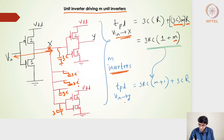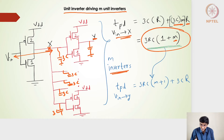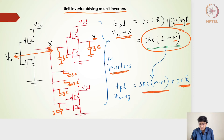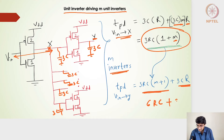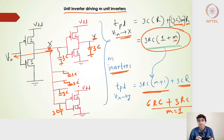The propagation delay from input to output y includes the delay to node x plus the delay through the second stage. At the second stage output, only 3c capacitance is seen, multiplied by its own switching resistance r, giving 3rc. So tpd(input→y) = 3rc(1+m) + 3rc. When m=1 this gives 6rc + 3rc = 9rc, which matches our earlier calculation. This is the more generic form for m unit inverters in the second stage.